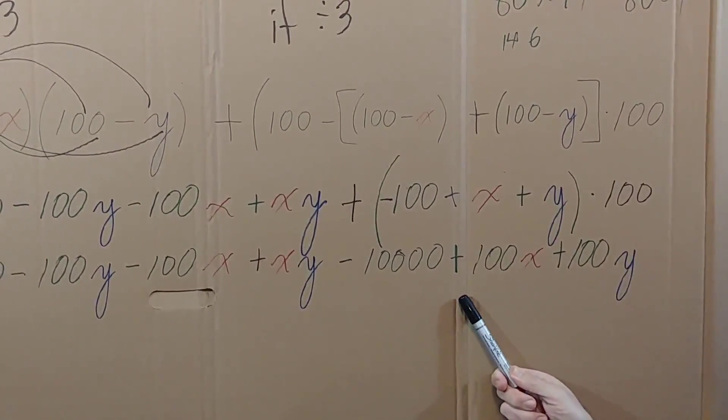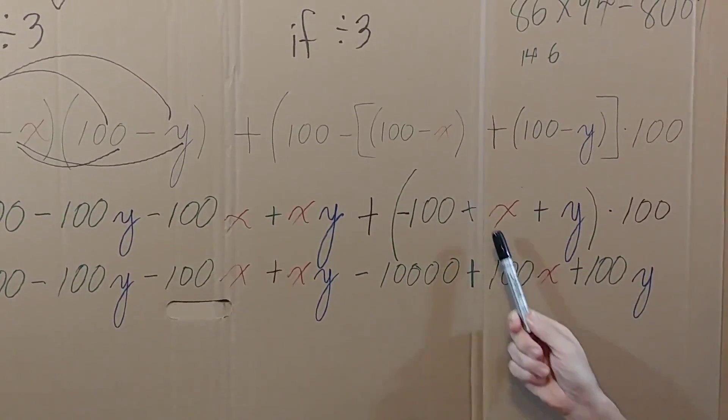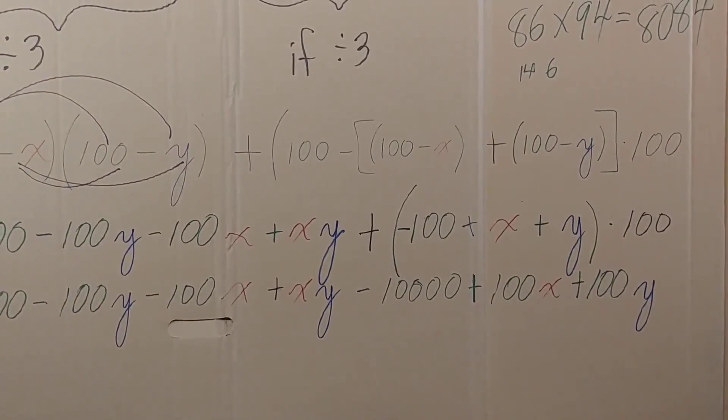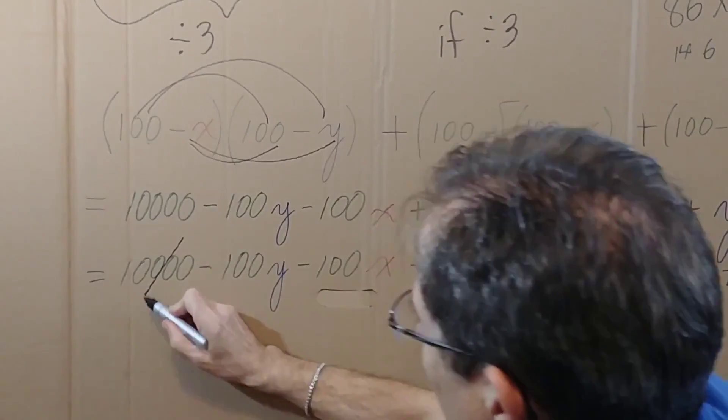So I get negative 10,000, negative 100x—I mean sorry, positive 100x—and positive 100y. Now look what happens if I add up all these terms. The 10,000 cancels with the negative 10,000.